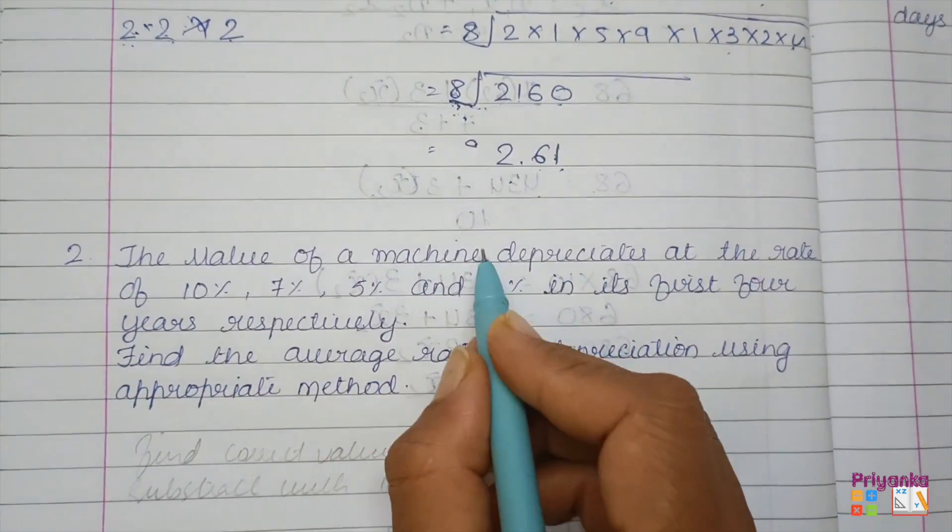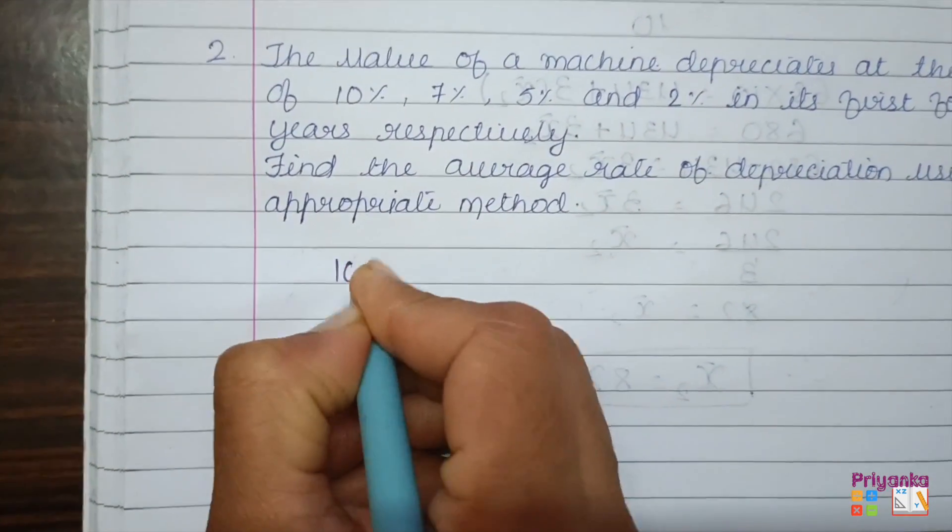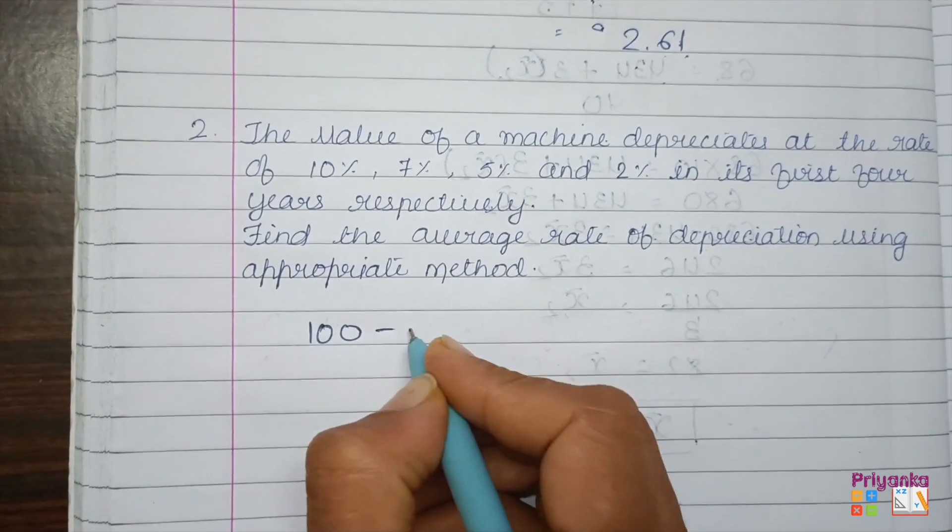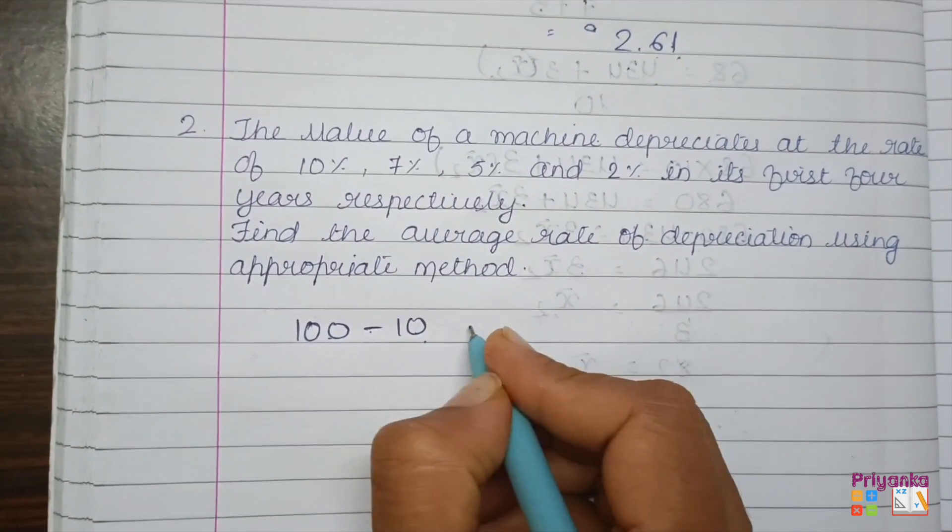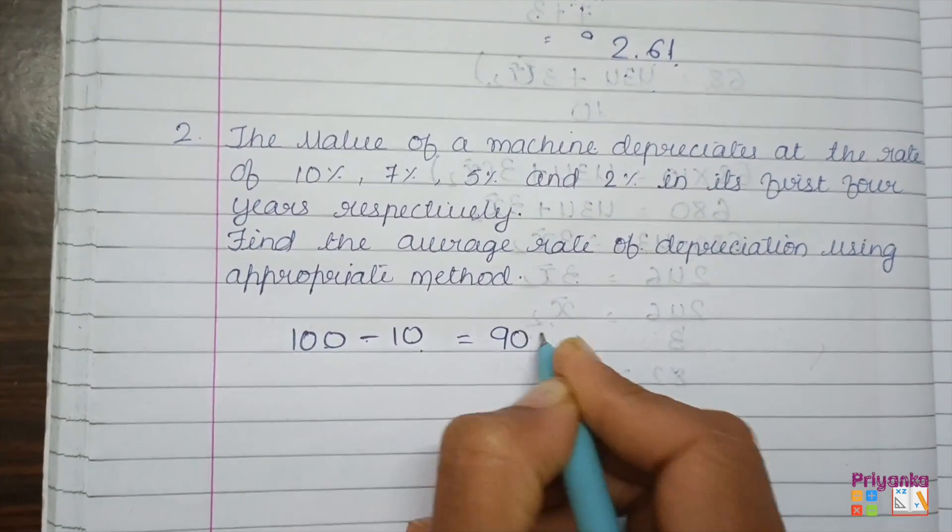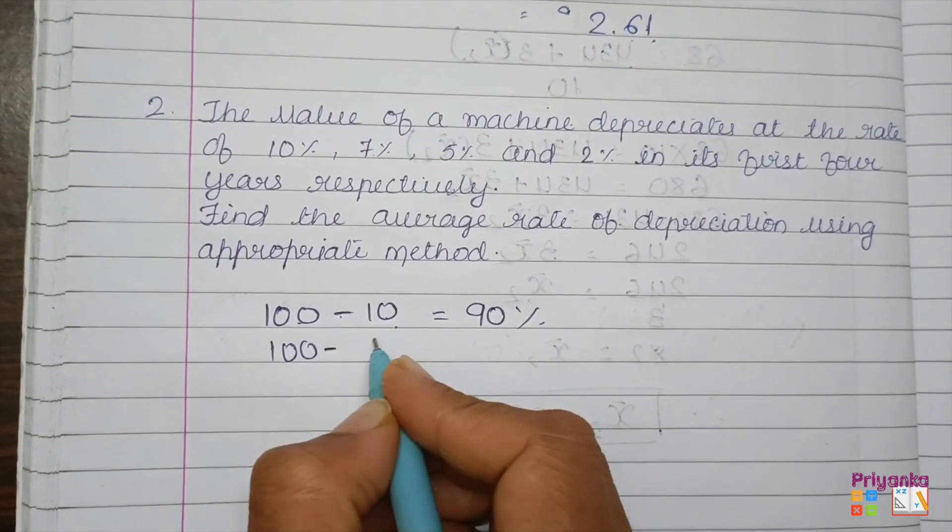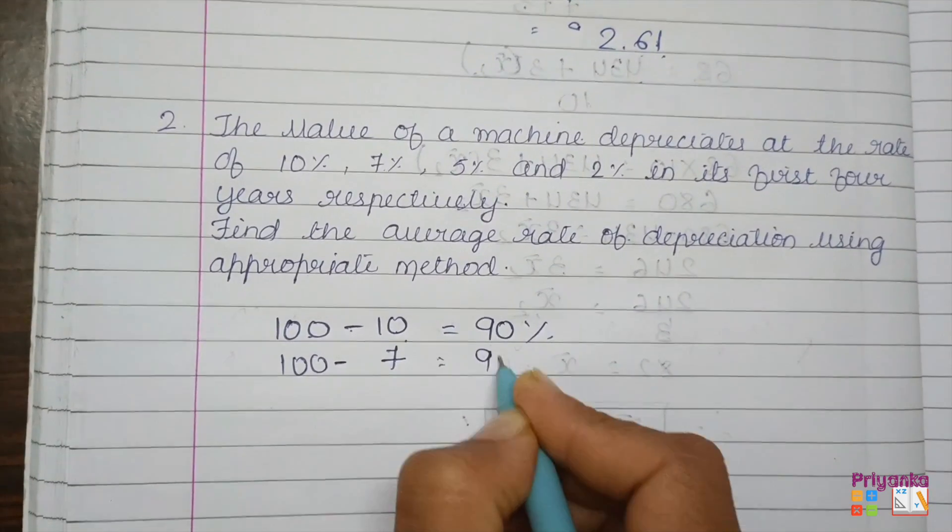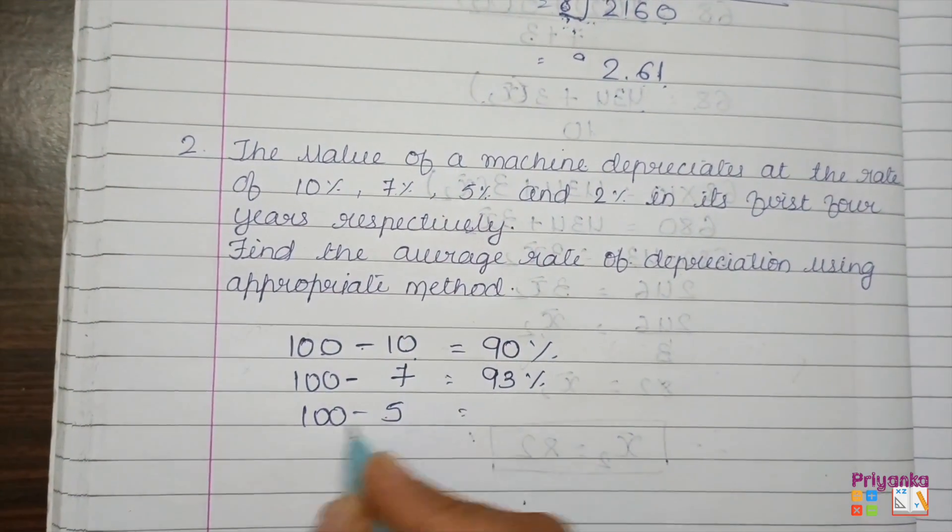This is how we are going to make a calculation: when the machine's amount must be 100, where the first year depreciation is 10. Depreciation means minus karna - the value of the machine is going to be reduced by 10%, so reduce means get it minus. So 100 minus 10, the machine value must be 90%. For the second year, out of 100, get minus with 7.